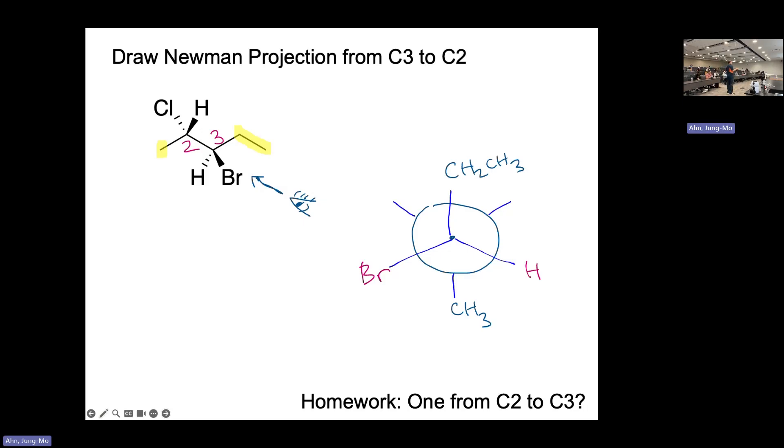For the back carbon, you're looking through the bond. There is a hydrogen and then chlorine. Chlorine is connected to the dash line, which means that it's behind the screen. Behind the screen is that ring, that is on your right side.